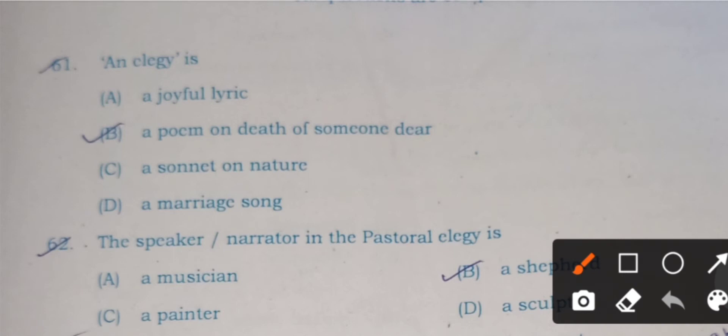Now without wasting time, let's come to question number 61. An elegy is: A) a joyful lyric, B) a poem on the death of someone dear, C) a sonnet on nature, and D) a marriage song. Here B is the correct answer. An elegy is a poem which is written to mourn the death of a dear person.